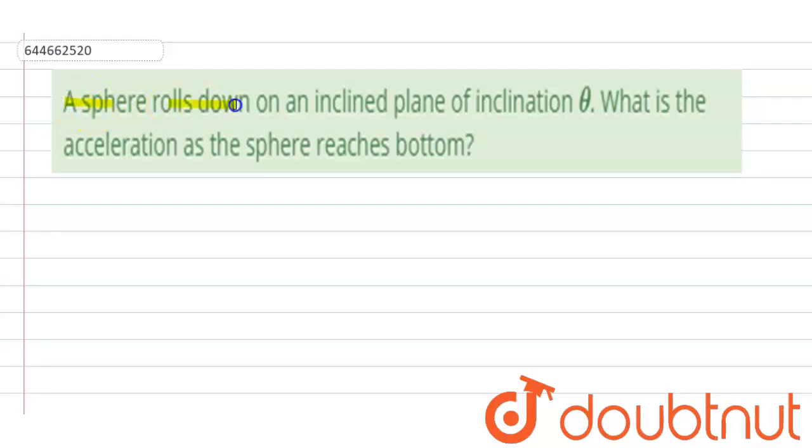A sphere rolls down an inclined plane of inclination theta. What is the acceleration as the sphere reaches the bottom?